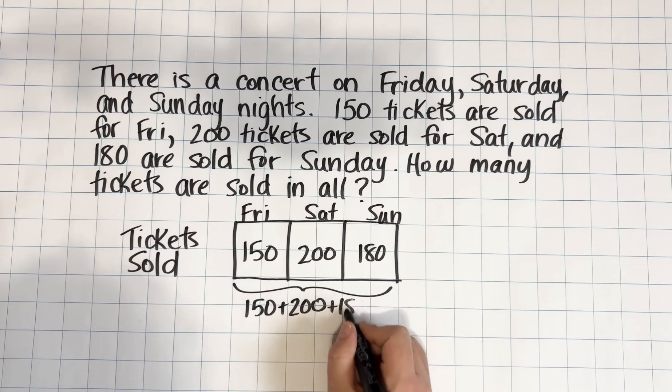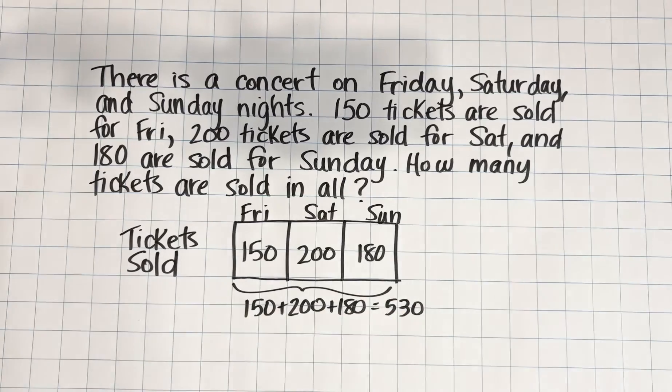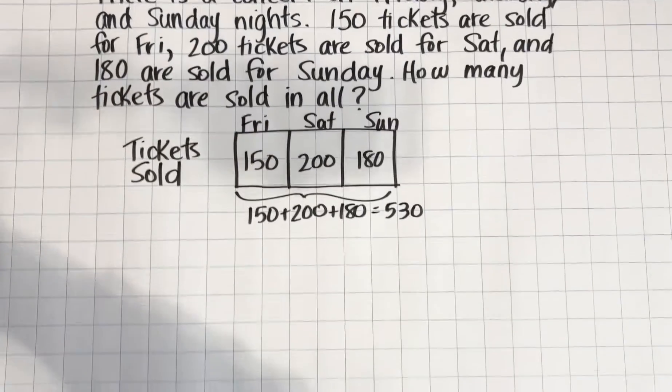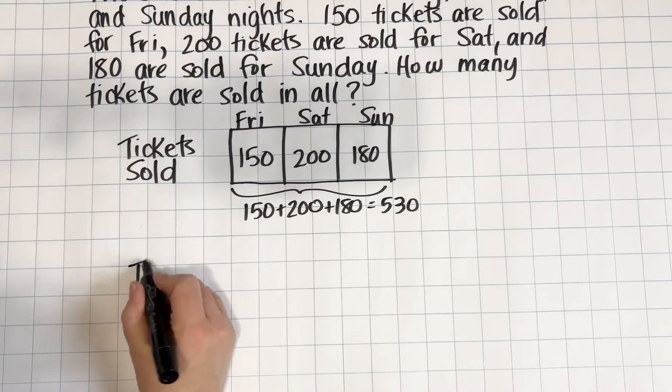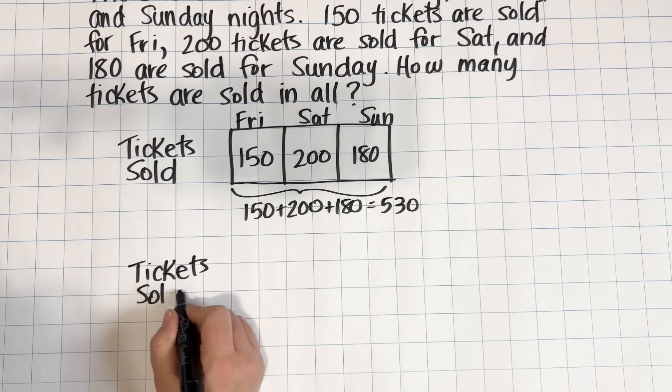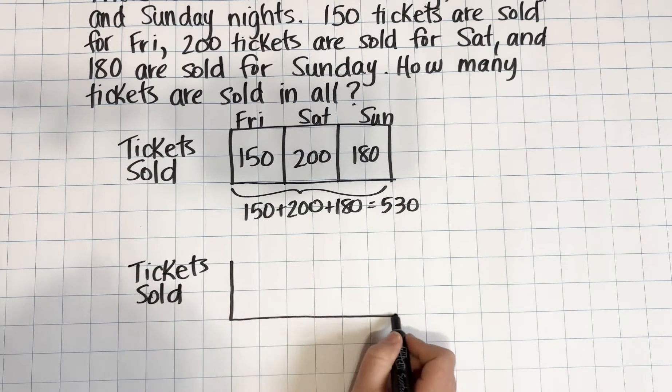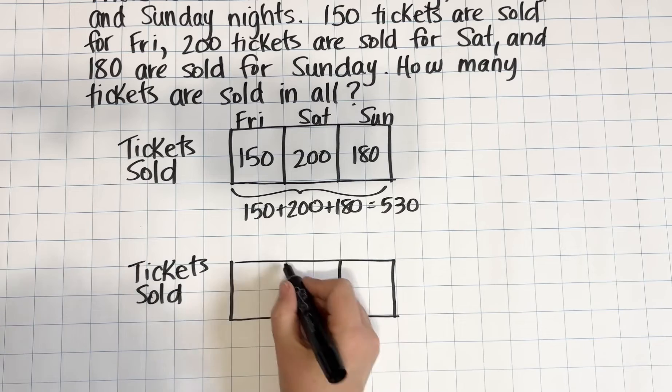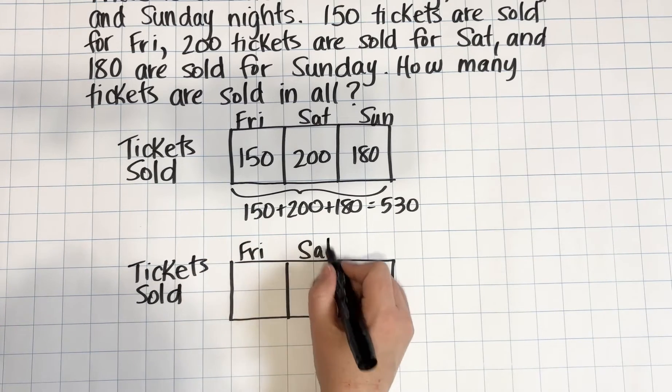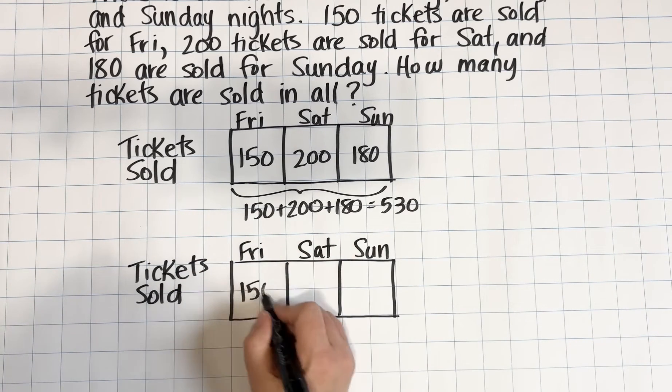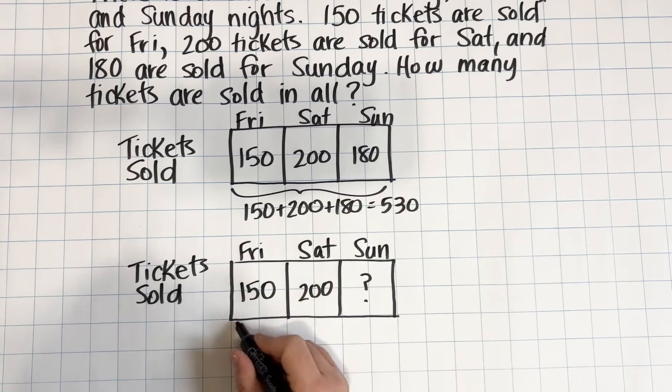Let's look at how this same information might be used for subtraction. Here we know our total number of tickets. We know the Friday night, we know the Saturday night, but we don't know the Sunday. So this time when we draw our bar model, it's really easy to see that we can simply take away the Friday and Saturday tickets from our total of 530 in order to figure out how many were sold on Sunday.